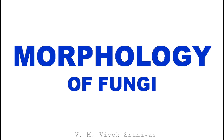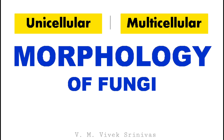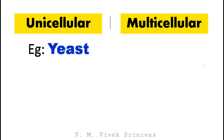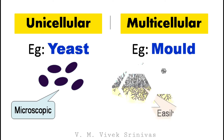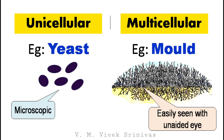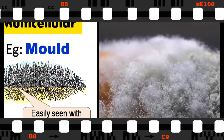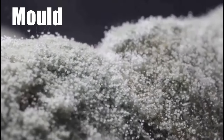Morphology of fungi: they are unicellular and multicellular. For example, yeast is a unicellular organism and mold is a multicellular organism. Yeast is microscopic and requires a microscope to visualize, but molds are easily seen with the unaided eye. The following is a fast-forwarded video showing the growth of mold.